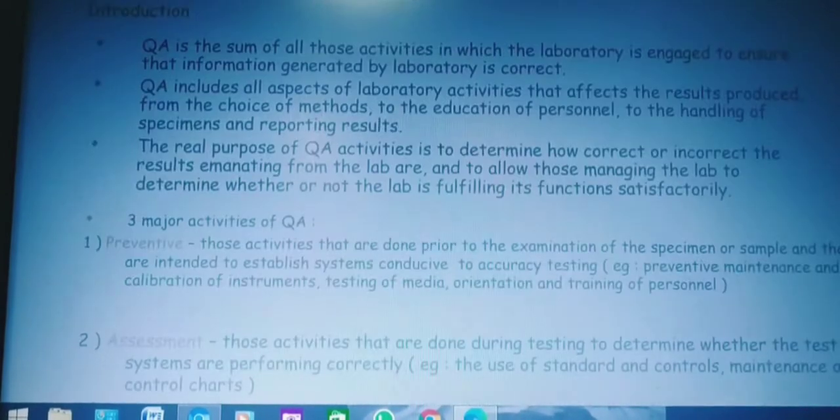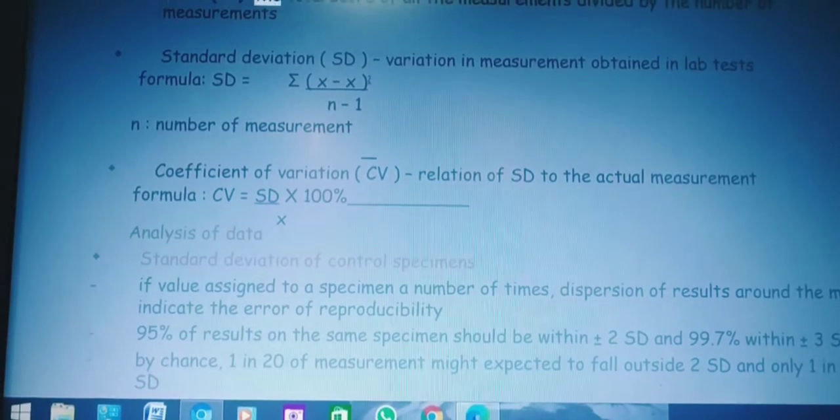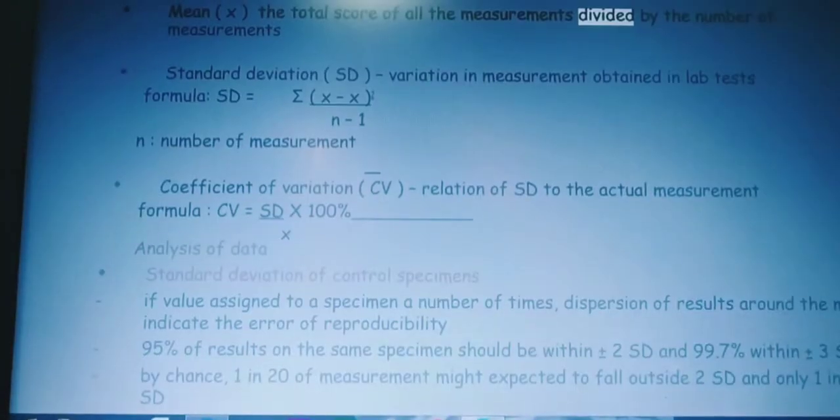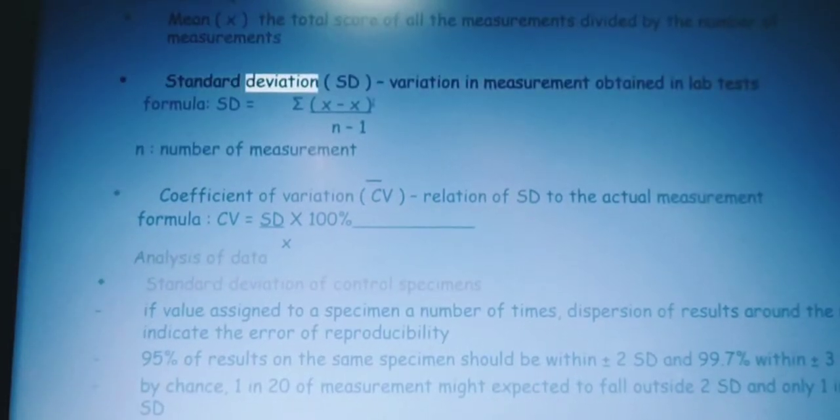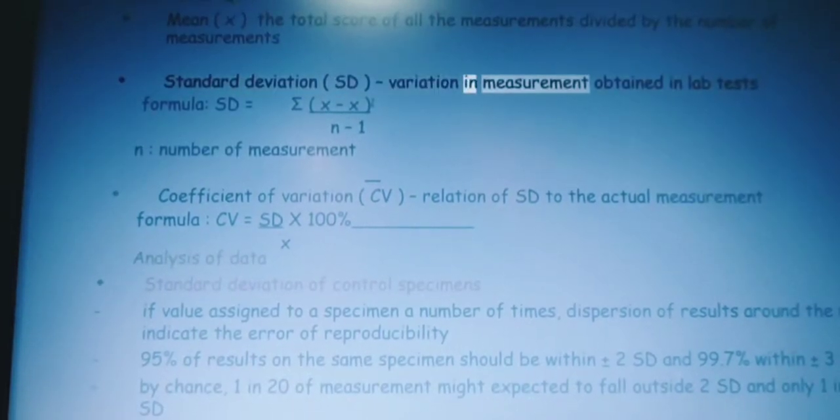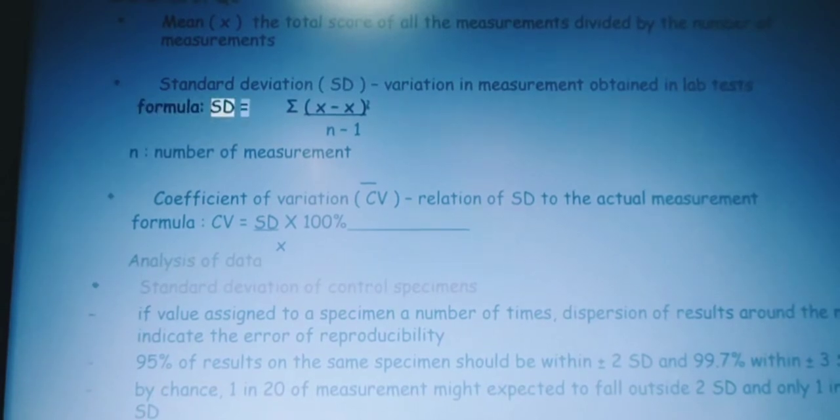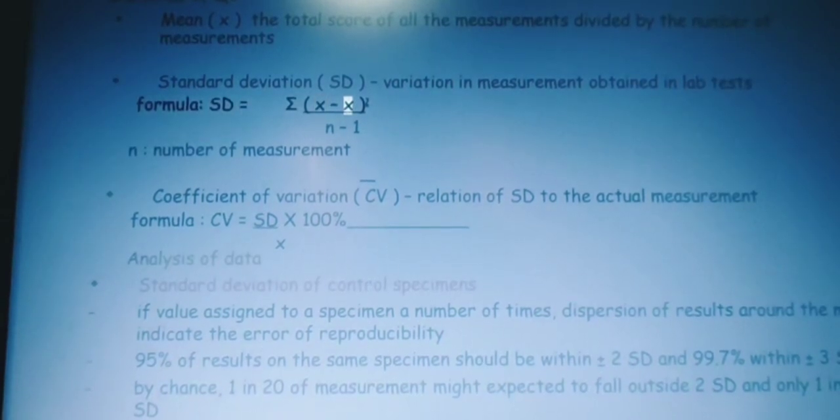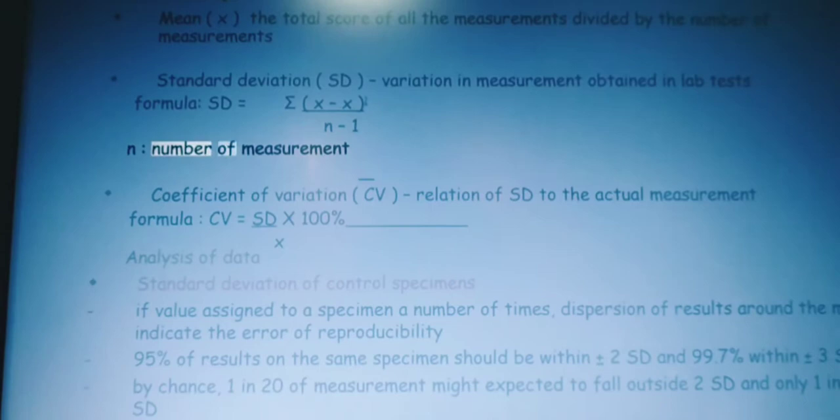Quality assurance in hematology: statistics of QC. Mean X: the total score of all the measurements divided by the number of measurements. Standard deviation SD: variation in measurement obtained in lab tests. Formula: SD equals sigma X minus X squared divided by N minus one, where N is the number of measurements.